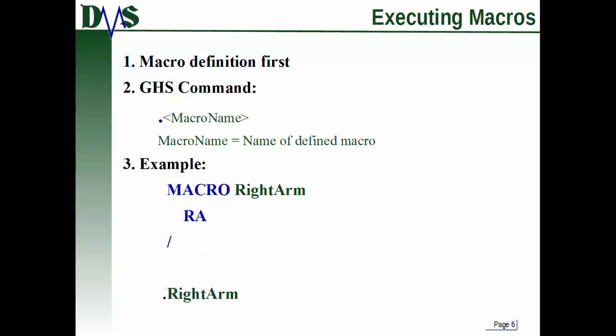Now you've created the macro — how do you actually use it? How do you execute it? Make sure you define it first, and that literally means, as you read your run file from top to bottom, the macro definition must come before the first time that you use it. The GHS command is '.macroname' — no space, just a period and then the name of your macro. There's also the 'execute' command which does the same thing, but the dot notation is essentially the shorthand and almost everybody always writes it that way.